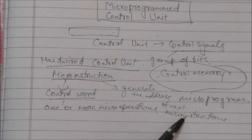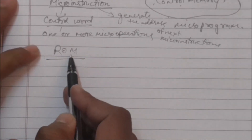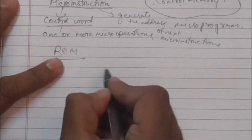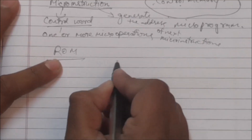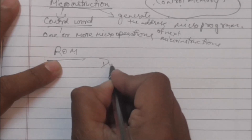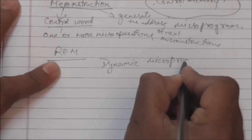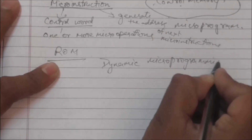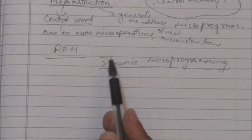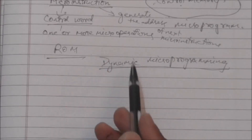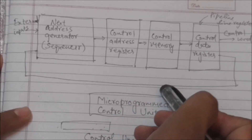Most of the time this control memory is a read-only memory. But there is a more advanced development which is known as dynamic micro-programming. Dynamic micro-programming permits a micro-program to be loaded from auxiliary memory.